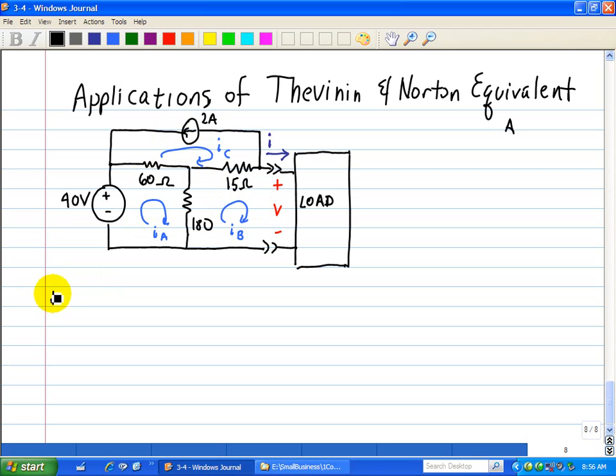For mesh A, we can do this by inspection. We have IA common in 60 and 180. So, IA goes through the 60 ohm resistor as well as the 180 ohm. All right, we're finished with IA.